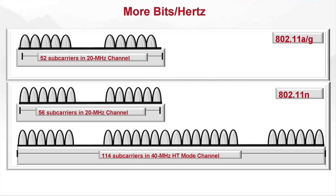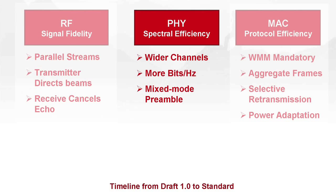There is a third thing, which is a mixed mode preamble. I'm going to skip that because it's more mechanics than core technology. To summarize the physical layer: there's wider channels — broadening the freeway; there's more bits per Hz — talking faster; and there's mixed mode preamble, which is a way of wasting less bandwidth.